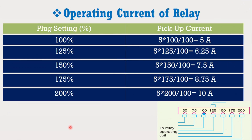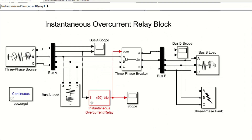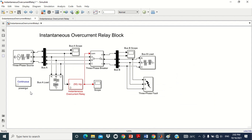Similarly, you can try to check the performance of the instantaneous overcurrent relay with different percentage voltage settings and high current settings. This model can be used for your bachelor degree final year project, or you can use this instantaneous overcurrent relay in any standard IEEE model to perform overcurrent protection for a master degree or PhD research objective. For your convenience, I have uploaded the PDF and the Simulink model as a link in the description section of this video. You may download it from there. If you like it, please like the video, subscribe to the channel, and share it with your friends. Thank you very much.